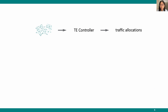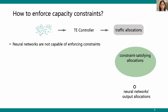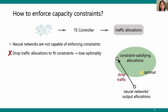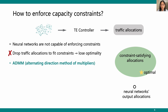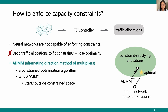The final challenge is enforcing capacity constraints on traffic allocations. Previous neural networks can only output coarse traffic allocations outside the constraint-satisfying region. One naive solution is to clip traffic allocations to fit constraints, but that sacrifices optimality. Therefore, we leverage ADMM, a constrained optimization algorithm, which iteratively fine-tunes traffic allocations from the upstream neural networks to satisfy more constraints. ADMM allows starting from a constraint-violating point, is highly parallelizable, and when started with neural network output, only 2 to 5 fast iterations are enough to significantly improve solution quality.